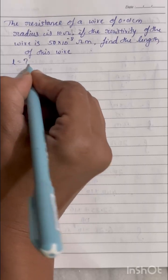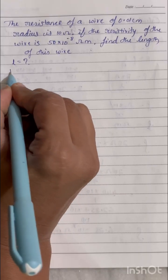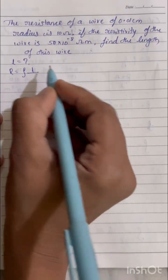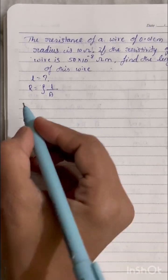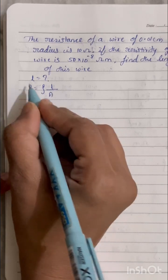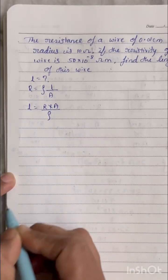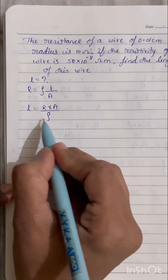Okay, so for length, how are we going to get the formula? We will get it from the resistance. So R equals to rho L by A, we are having the formula. Now let's make it L equals to, so L equals to A is going up, it will become R into A divided by rho.